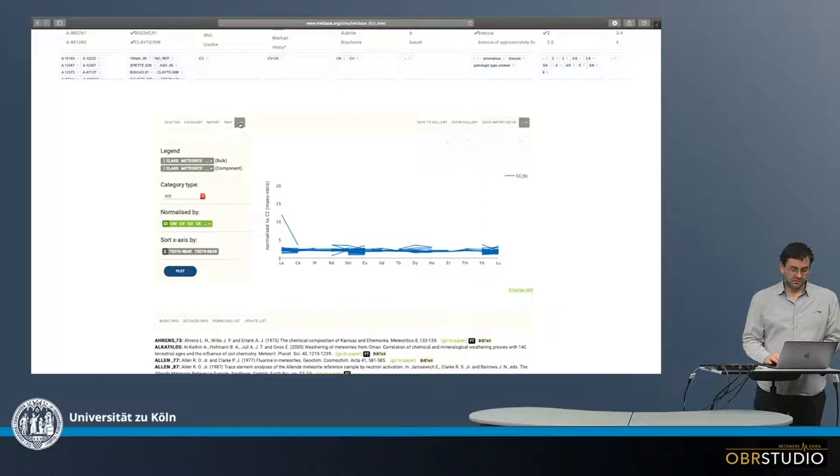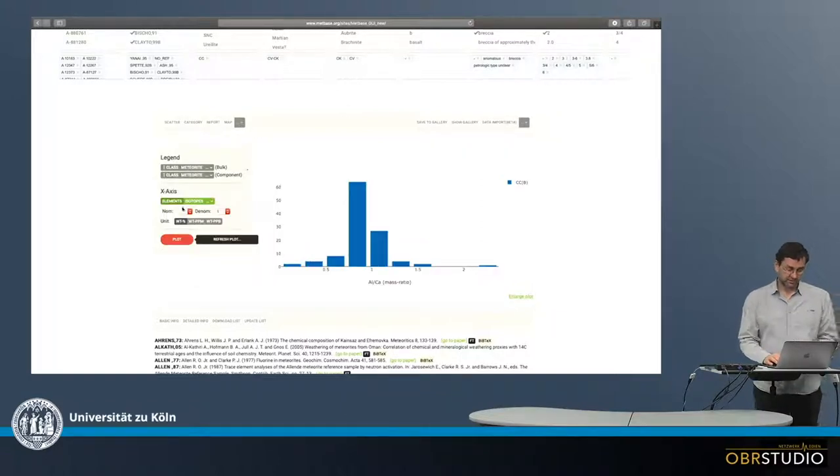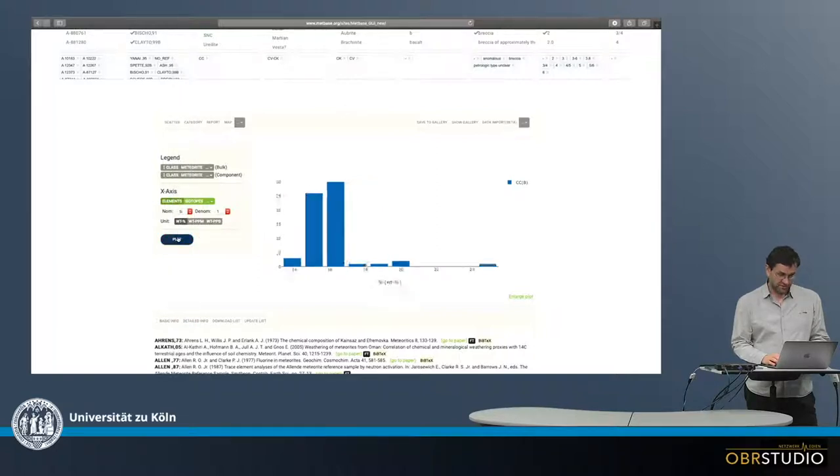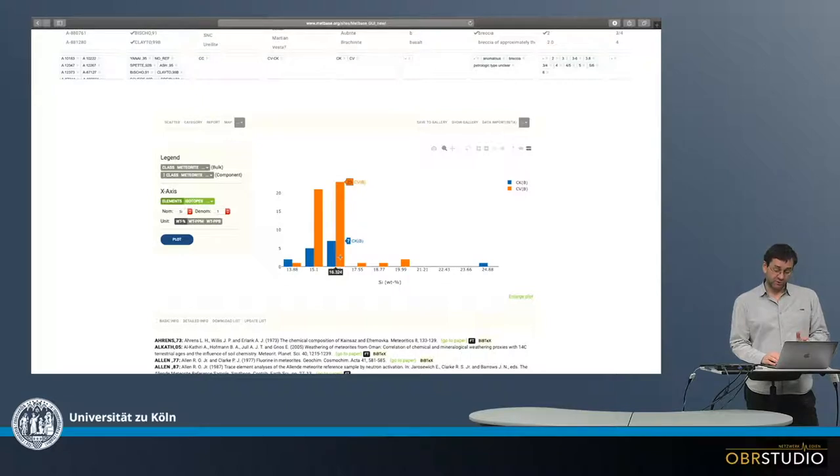Or I could also then choose a histogram and look at the histogram. Choose here for example silicon. It's been here already. And plot this. And then we get a silicon histogram of the CK-CV clan. I can, let's click on the group name. So then it would be separated by CK and CV. So then there are basically two data lines. This is why then there are two bars as well. So these are sometimes also called bar charts.